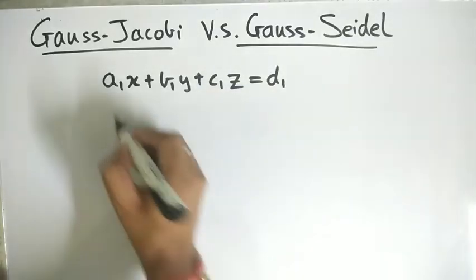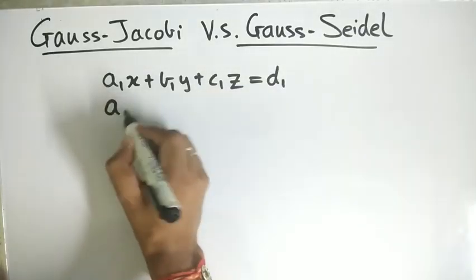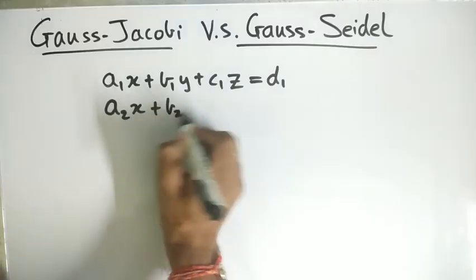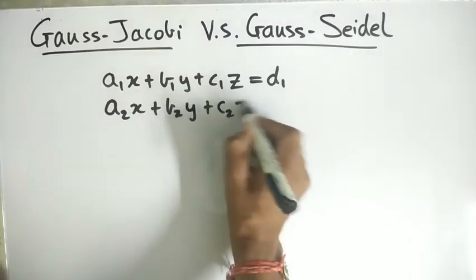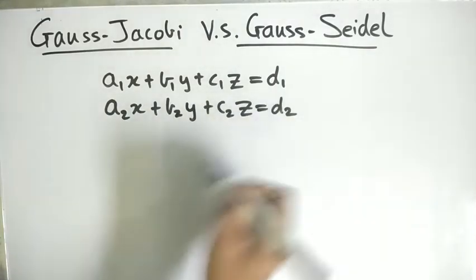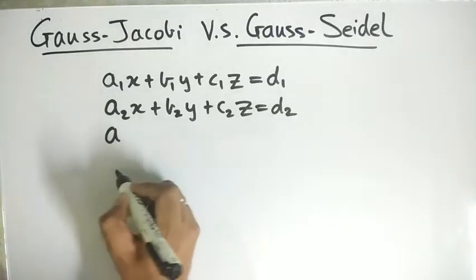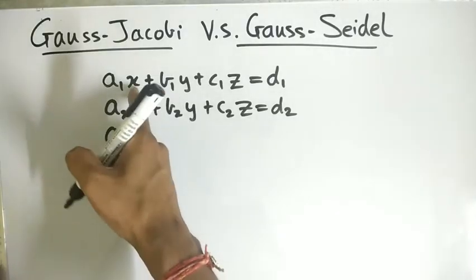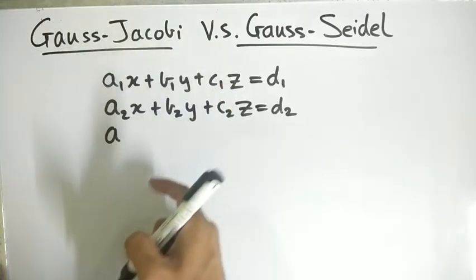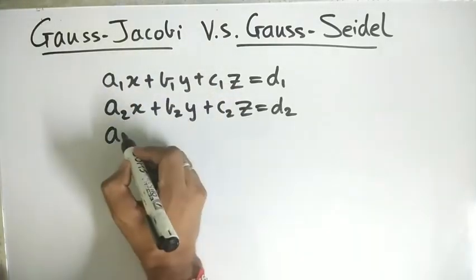Then a2x plus b2y plus c2z is equal to d2, the second equation, and the third equation. So three equations and three variables: x, y, and z. And there are three equations, so we can solve it.